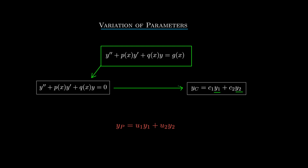The idea of the method of variation of parameters is to try and build a particular solution yp which is of this form. The y1 and y2 are just these two functions coming from the complementary function, and the u1 and u2 are just arbitrary functions.